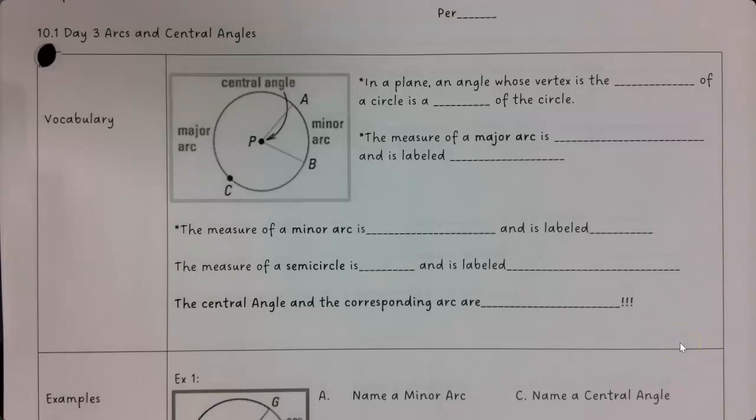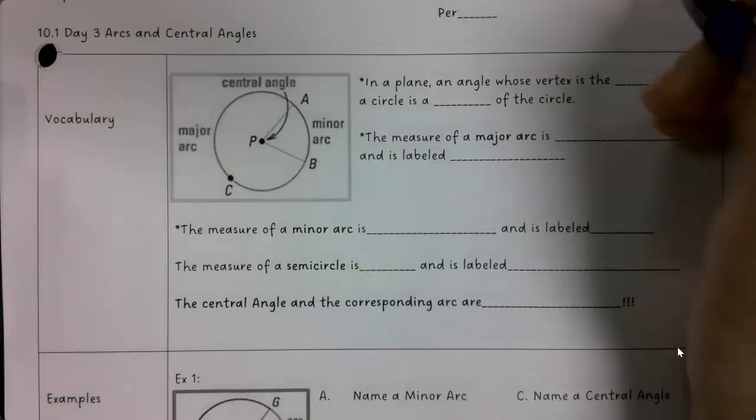Today we are talking about arcs. In a plane, an angle whose vertex is the center of a circle is an arc of a circle.